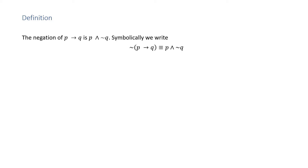Symbolically, we write the negation symbol, open parentheses, P right-arrow Q, close parentheses, and that equals P and squiggly Q.